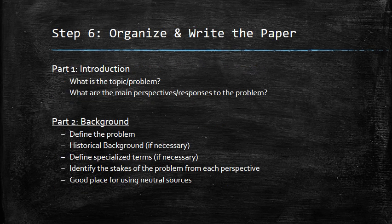Now we're into step six: organize and write the paper. Really, we've been writing the paper all along by gathering information and arranging it. Now it's just a matter of putting down specifics and fleshing out the details. Part one of your paper is the introduction, where you identify the topic or problem you're researching and identify the main perspectives or responses to the problem — one group argues this, another group argues that.